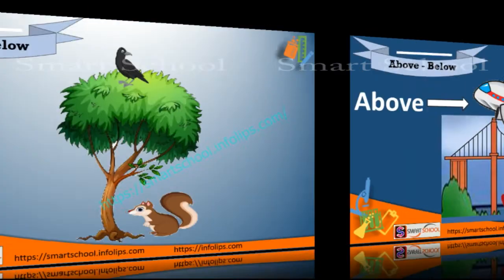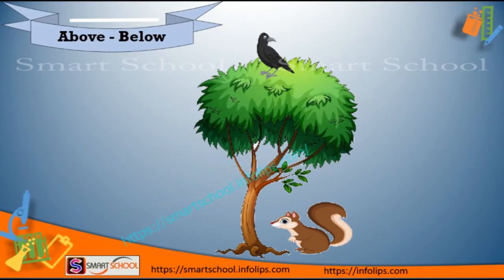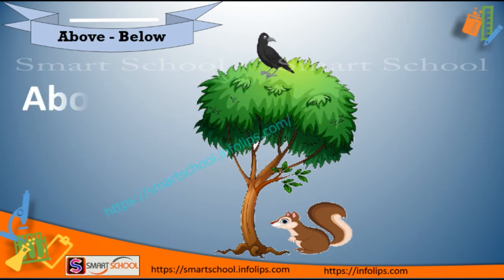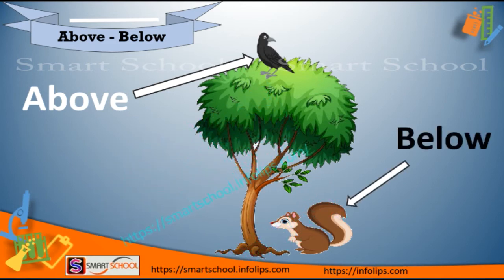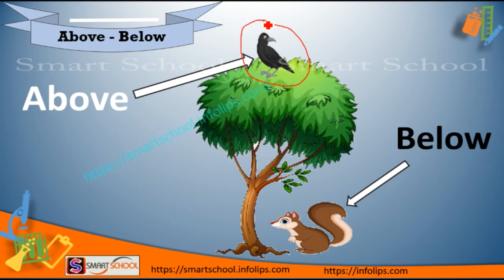Let's see another one. Tell me who is above and who is below in this picture. Crow is above and squirrel is below. Yes, this crow is above and squirrel is below. This crow is above on the tree and this squirrel is below on the tree.